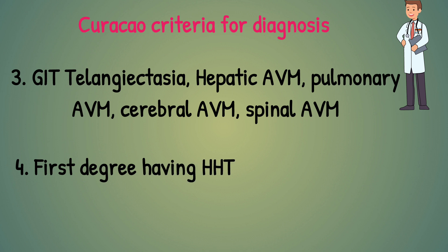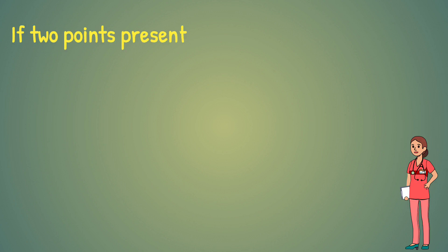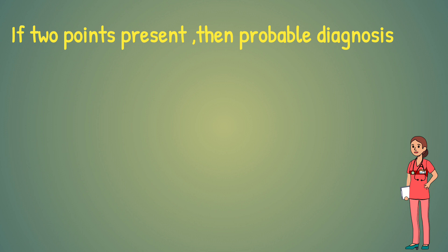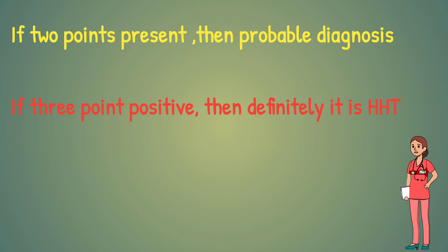Number four is having a first-degree relative with Hereditary Hemorrhagic Telangiectasia. If the patient fulfills two points, a probable diagnosis of Osler-Weber-Rendu syndrome can be made. If three points are positive, then it is definitely Osler-Weber-Rendu syndrome.